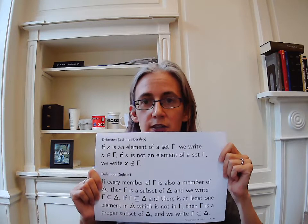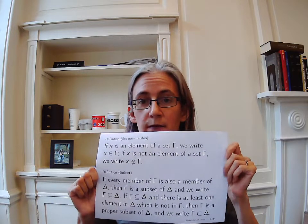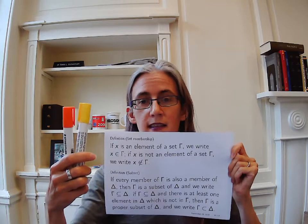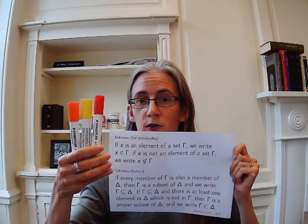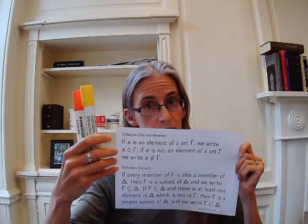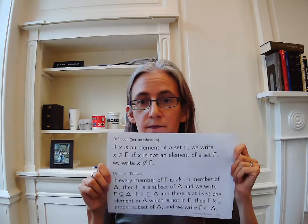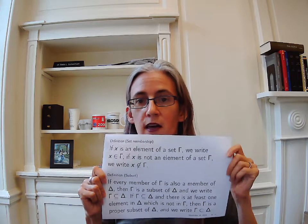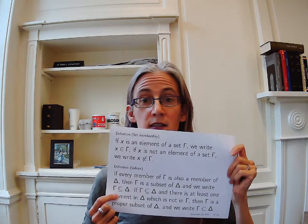We also have a definition that has to do with the relationships between two sets — that is the relationship of subset. Say that we have two sets, gamma and delta. For instance, gamma is the set that has the orange and the yellow marker, and delta is the set that has the red, orange, and yellow. Then gamma, just these two, is a subset of delta, these three, if every member of the smaller set is also a member of the bigger set. When that is the case, we have this horseshoe-shaped symbol to indicate the subset relation.